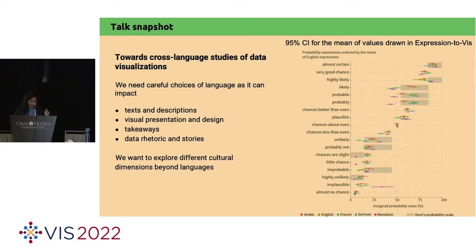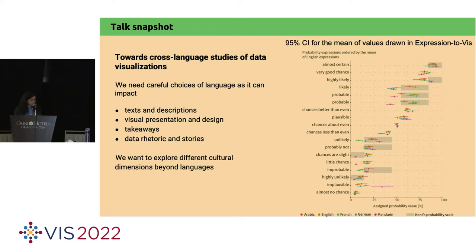That's a good question. For our study, when we did the translations, we recruited native speakers. The idea behind the study was to showcase how people speaking those different languages would interpret probability expressions in different values through the icon array without the intermediate of numerical values. We do hope the study surfaces differences between expressions across languages in how people assign probabilities to visualization when we abstract away the numeric numbers.